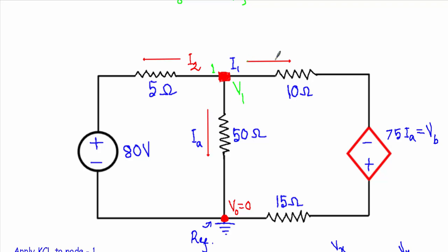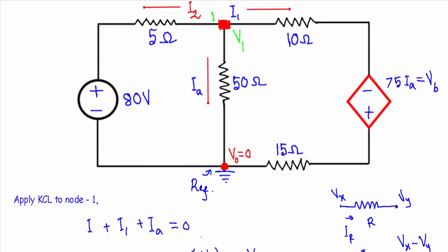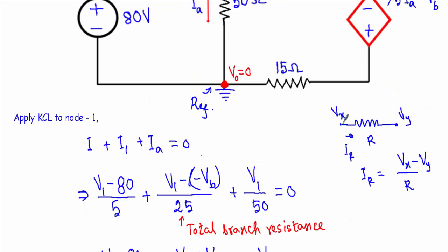Ia will be outgoing, I1 will be outgoing, and the current flowing in this branch is I2. Since I2 is also an unknown current, it will also be outgoing from node 1. Now let me apply Kirchhoff's current law at node 1.